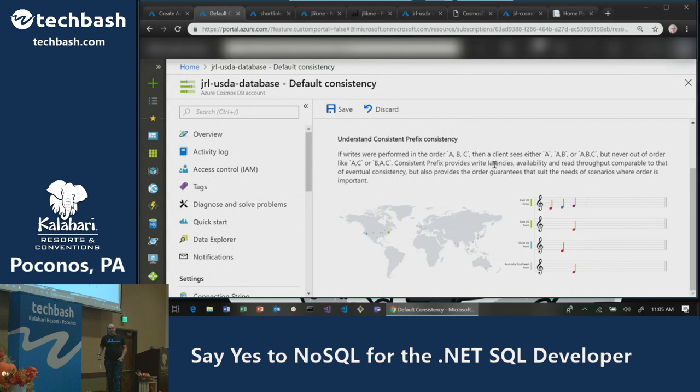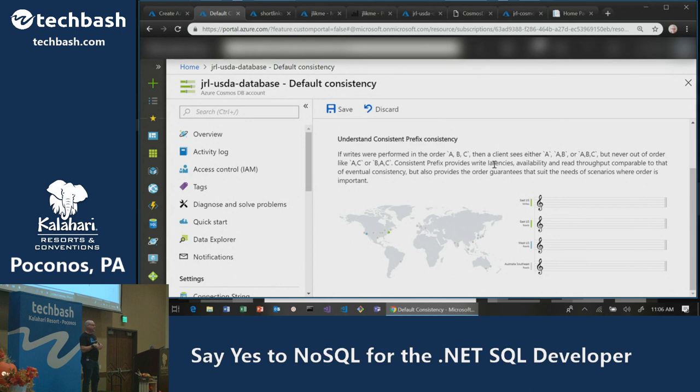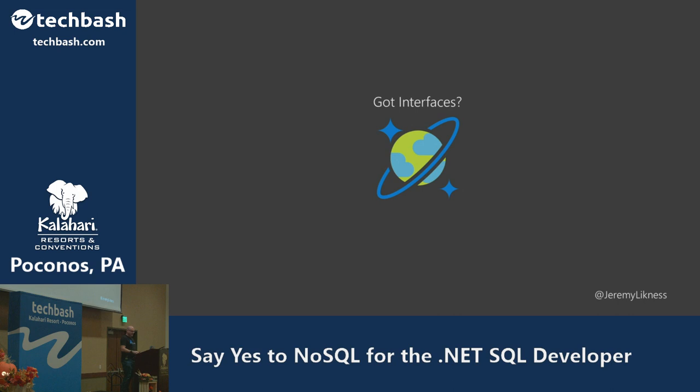Finally, consistent prefix guarantees you see records in order but brings them in whenever it makes sense — you're not setting a specific time or operations guarantee. Session, consistent prefix, and eventual consistency have higher availability and throughput and actually cost less to manage than strong and bounded staleness consistency levels. There's a link where you can dig into more detail — this could be an entire talk on its own.